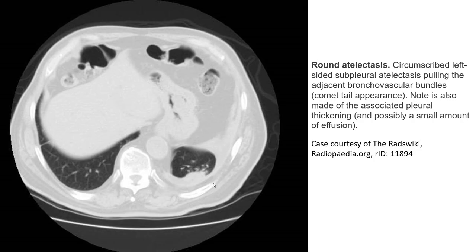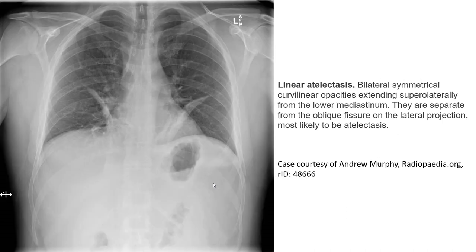On CT, circumscribed left-sided subpleural atelectasis following the bronchovascular bundle was seen. CT also showed bilateral symmetrical curving linear opacities extending superolaterally from the lower mediastinum, separate from the oblique fissures on lateral projection, most likely to be atelectasis.